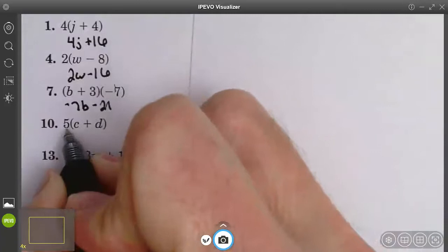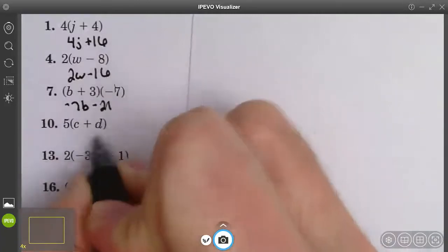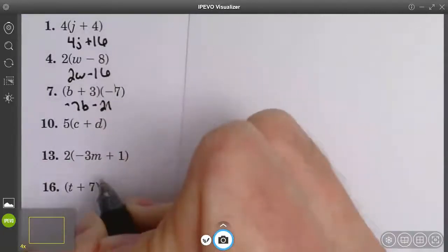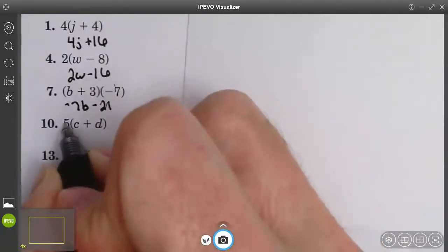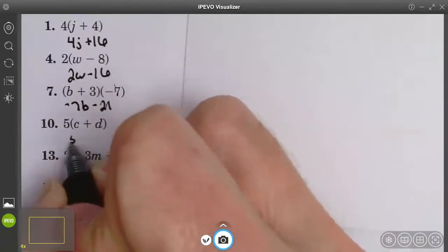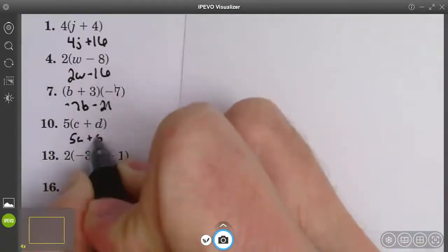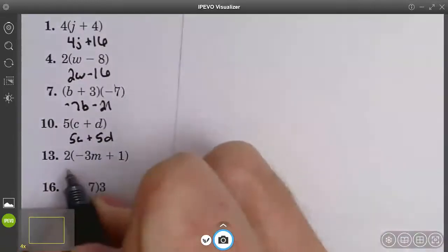Number 10. These are both variables. When you have two variables with the same exponent, you want to write your answer in alphabetical order. So we'll start with c. 5 times c is 5c. 5 times d is 5d.